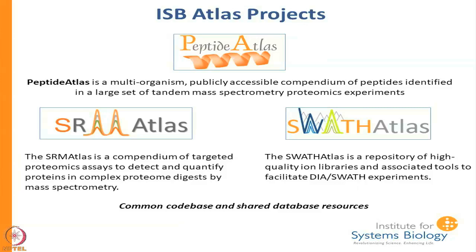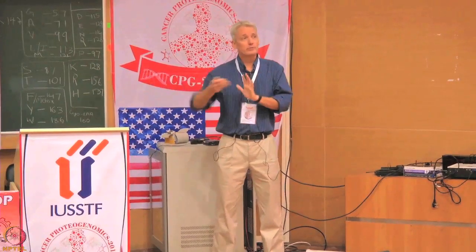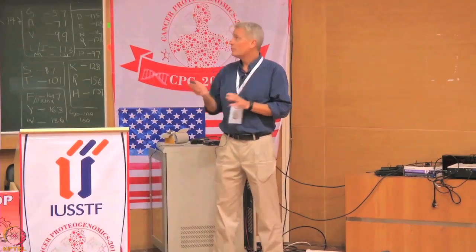Peptide Atlas contains DDA data, SRM Atlas contains SRM data, and SWATH Atlas contains SWATH data. Peptide Atlas is by far the most developed. SRM Atlas and SWATH Atlas provide searching interfaces so that you can get the data you want and hopefully render it in a way useful for your own experiments.